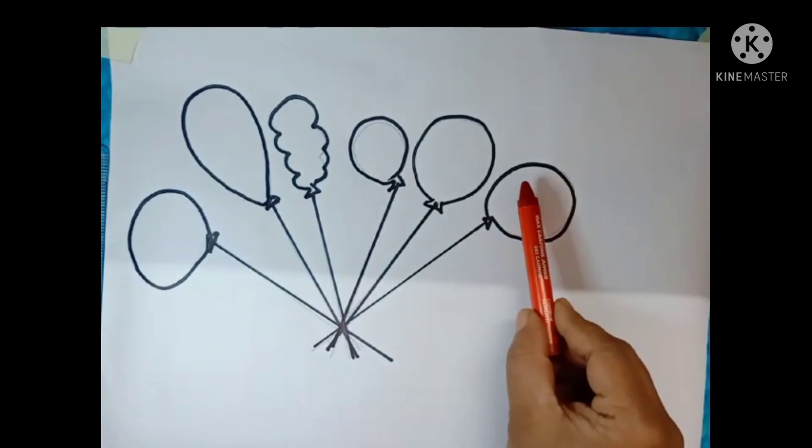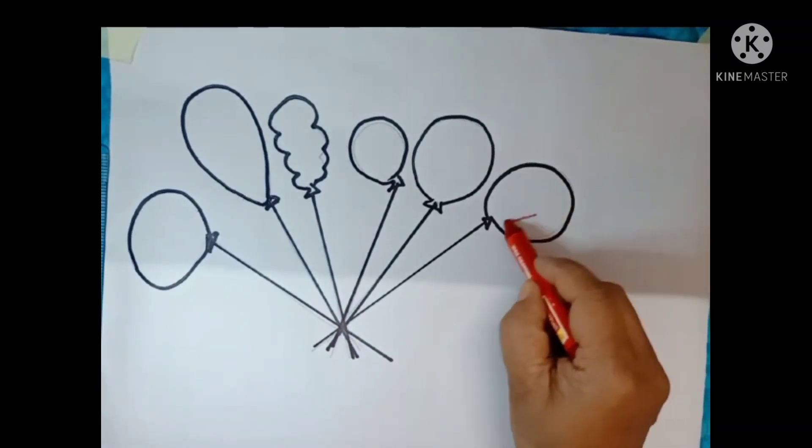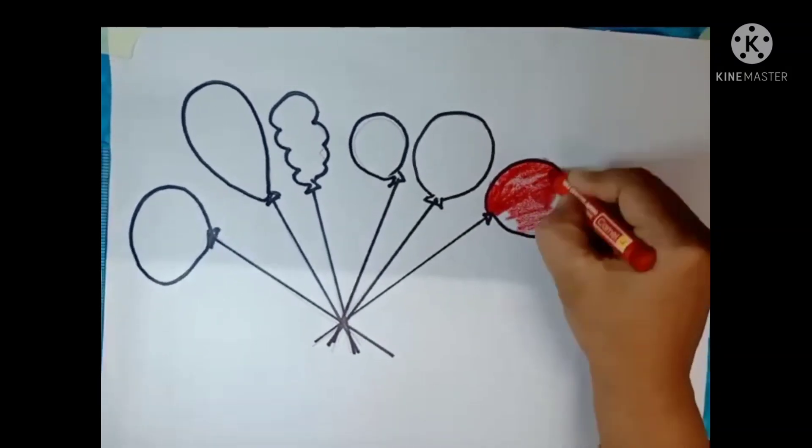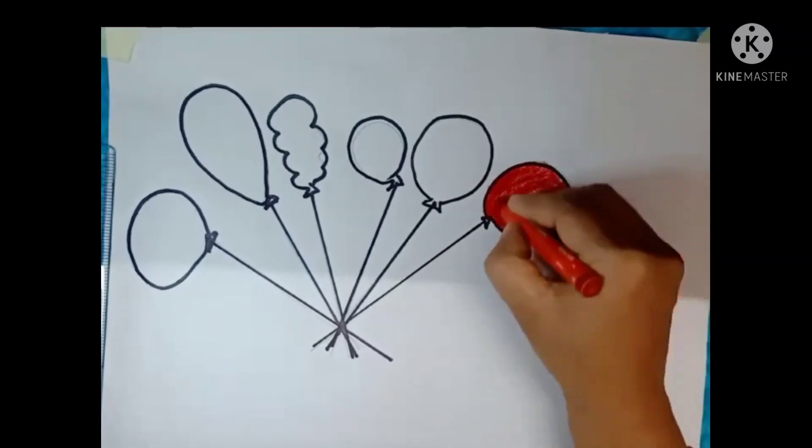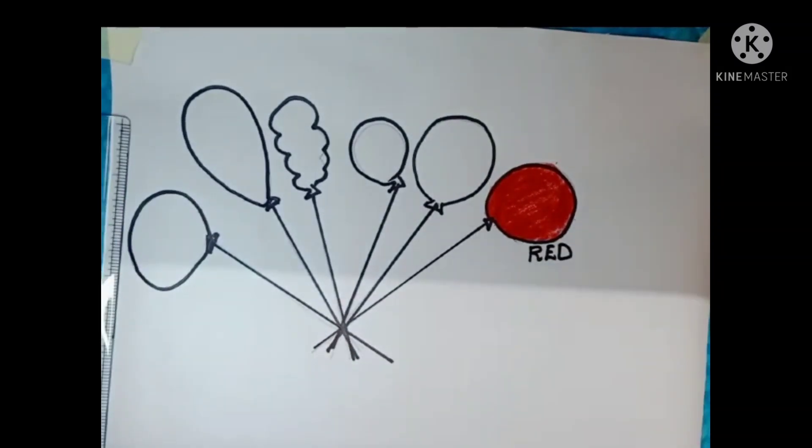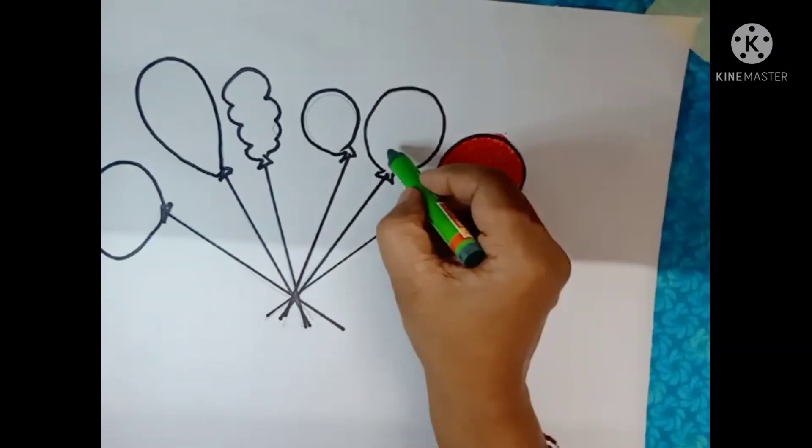Take a red crayon pencil and color the first balloon. This is red. This is red color. Draw the spelling also.